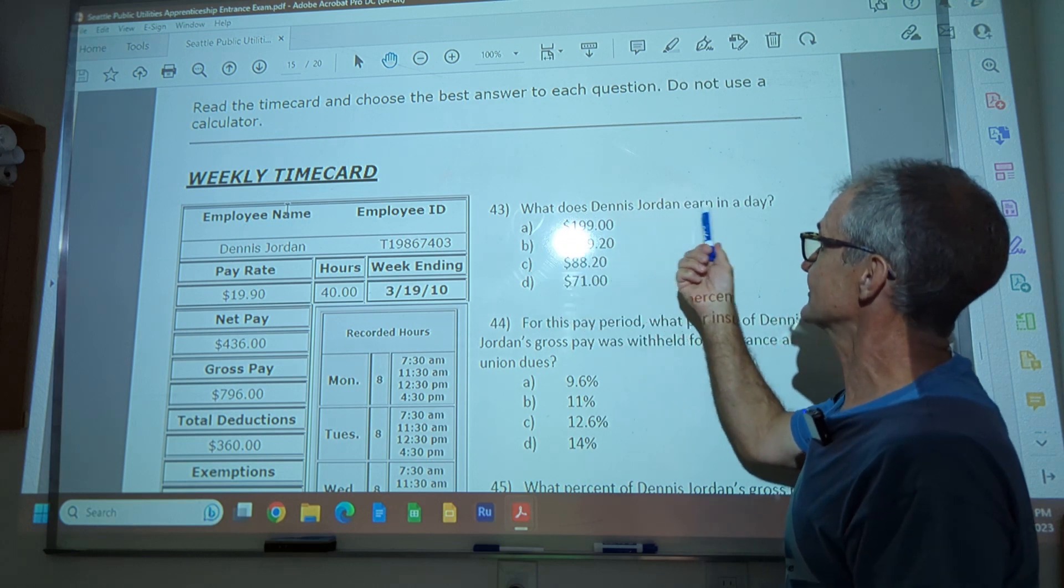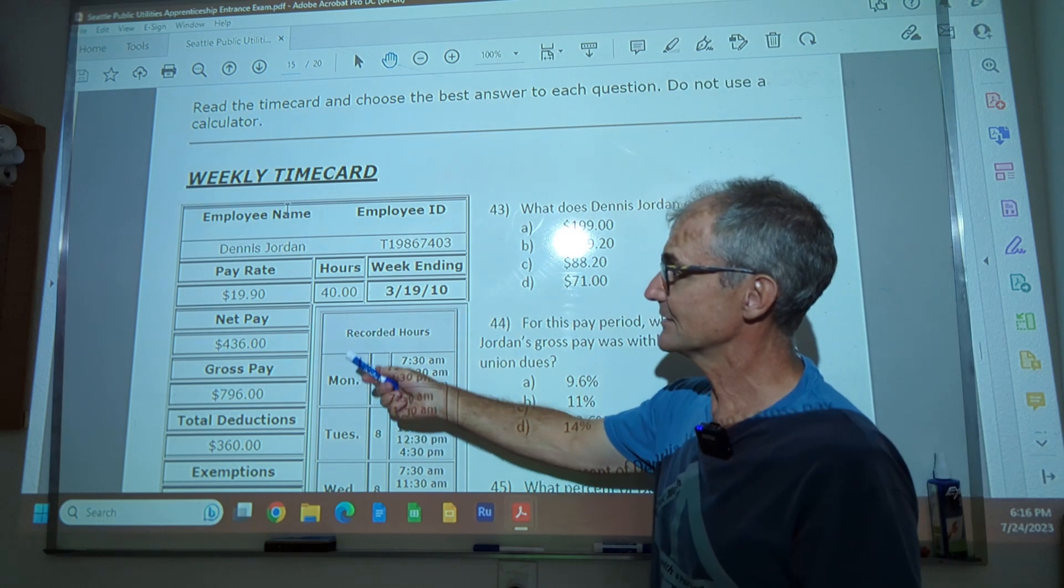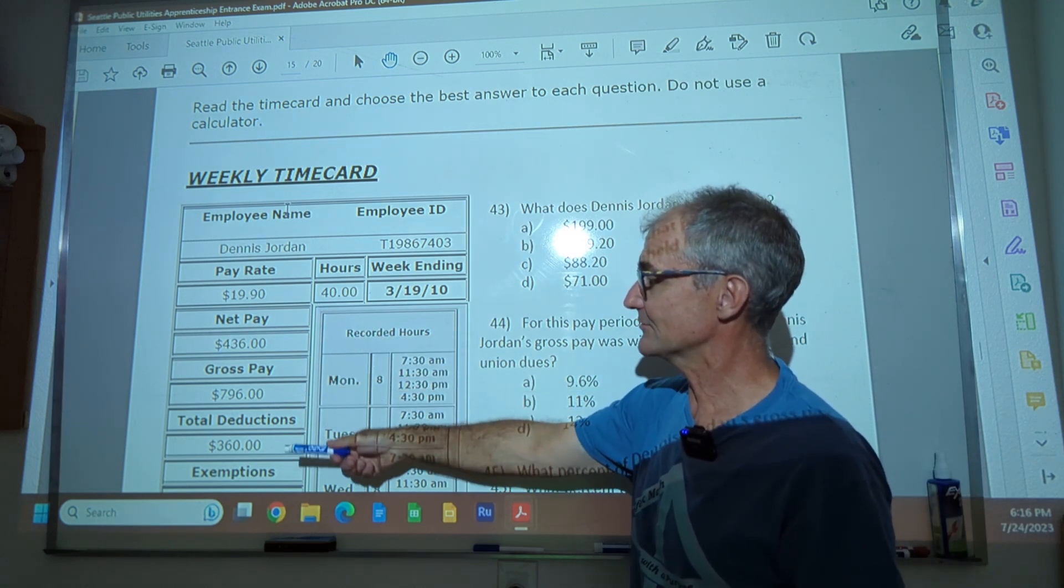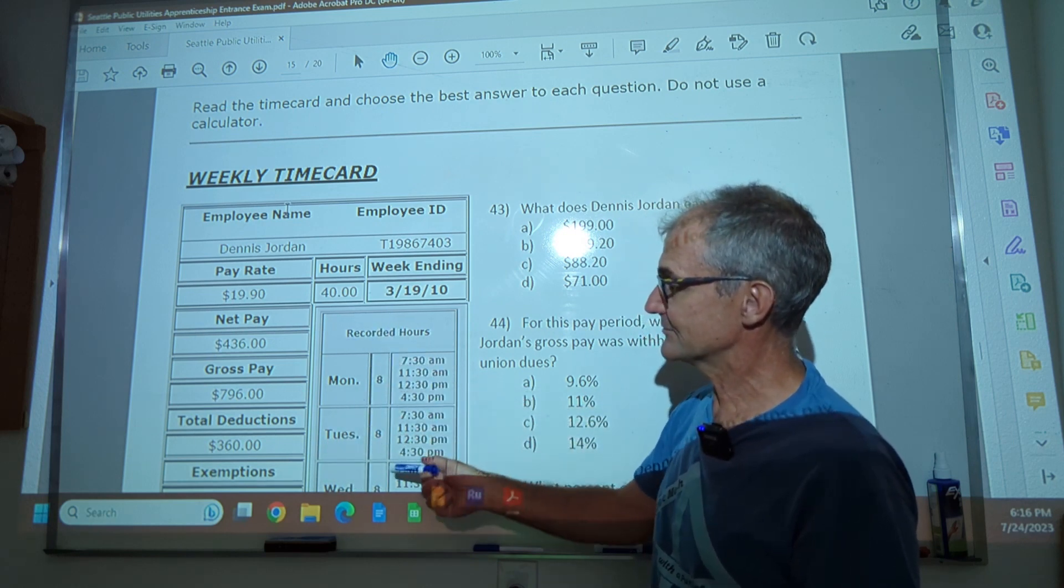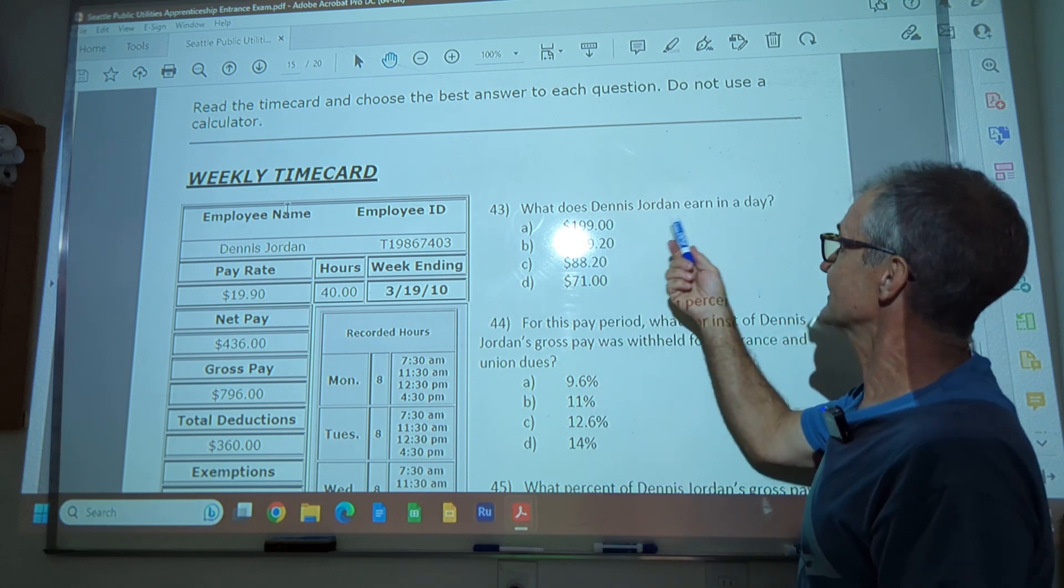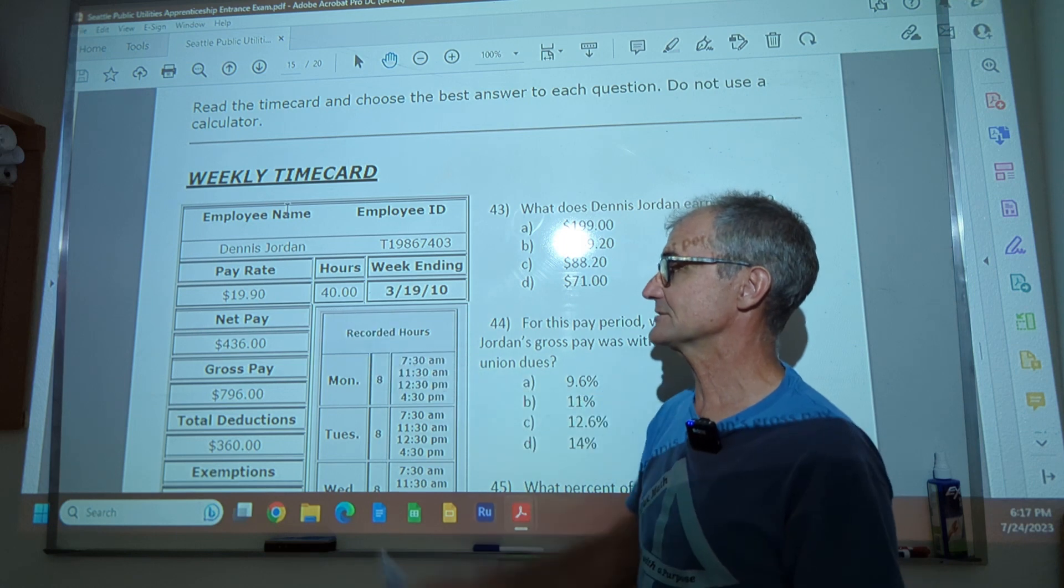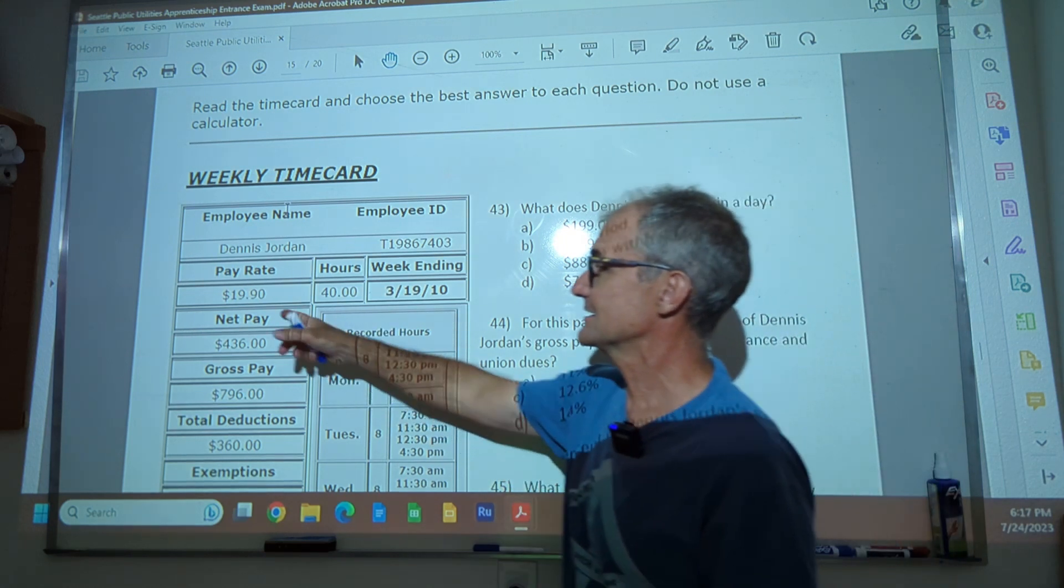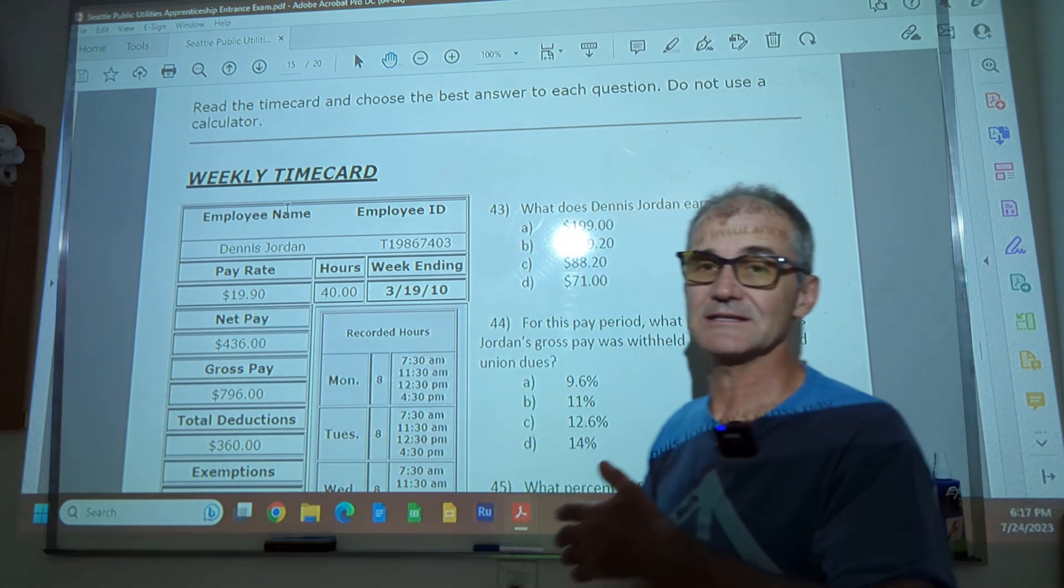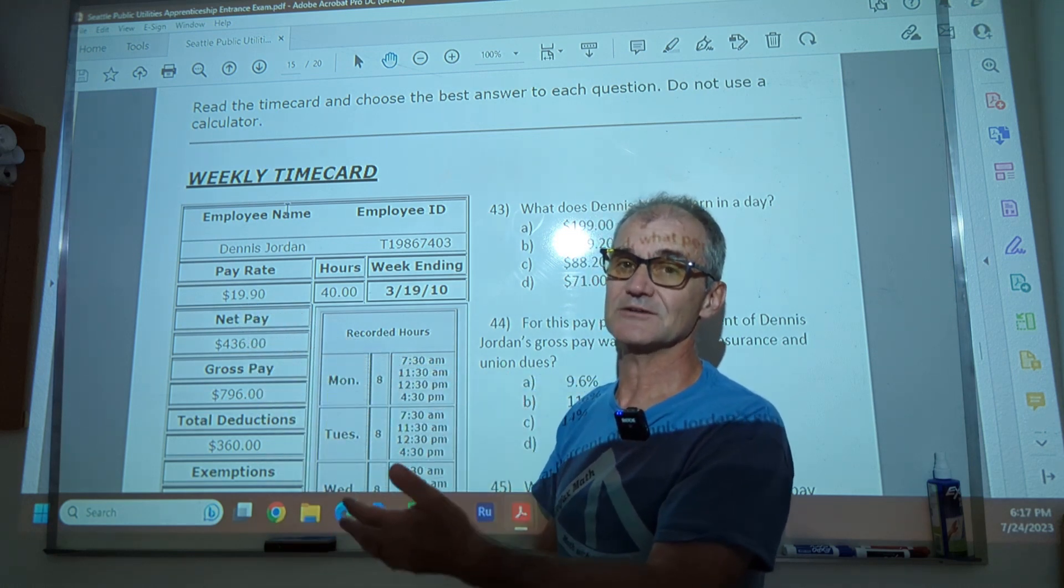43, what does Dennis Jordan earn a day? So I'm looking for a day rate. I look down here at the time card pay rate. That's an hourly rate, net pay, gross pay, total hours, the hours he worked, deductions. So the best way to figure out what he earns in a day is if he works 40 hours a week, that's the standard week. He works eight hours a day. I'm going to do eight times a little bit less than 20, right? Eight hours in the day, a little bit less than 20, 20 times eight is 160. So it should be a little bit less than 160.